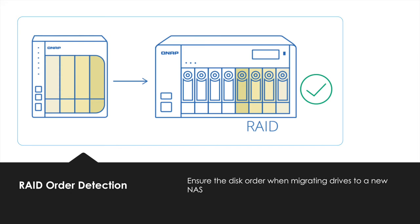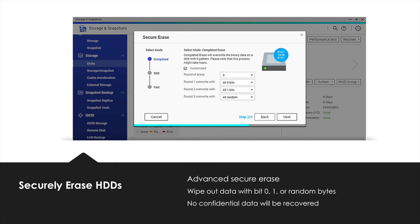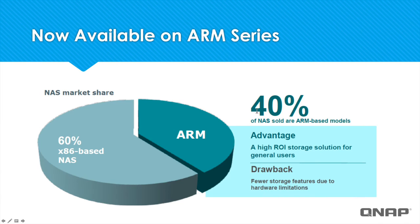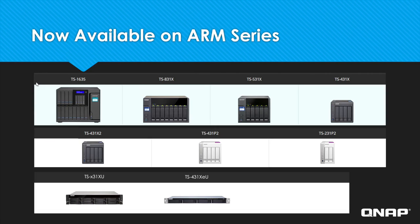Moving data between NAS systems becomes much easier. There may be times when you need to make sure that you have completely deleted a file so that it can't be recovered. You'll now have the ability to completely erase your hard drives with no trace of the data remaining so that confidential data won't be recoverable in any way. About 40% of our NAS units that are sold are powered by an ARM processor. Our ARM processor NASes are a popular, cost-effective option for home and small business users. Now, we are making available the invaluable feature of snapshot even on our ARM processor units.